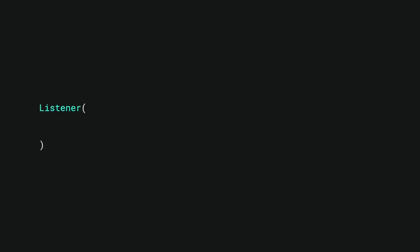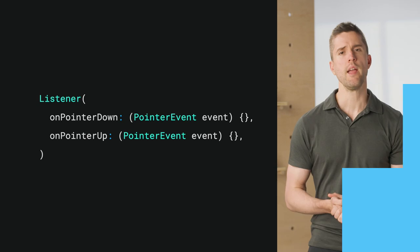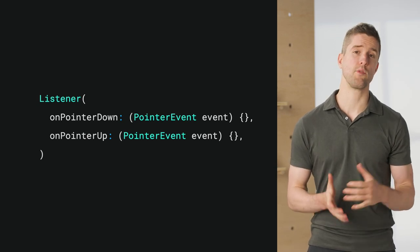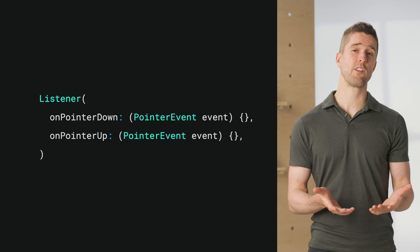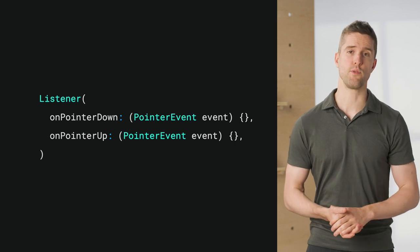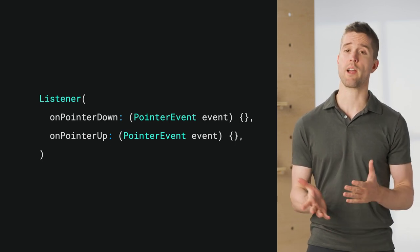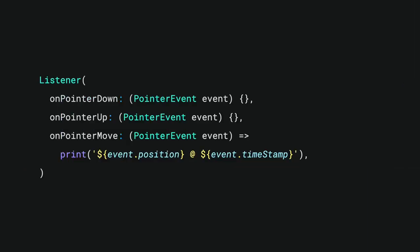Add some callbacks. To follow click events, subscribe to OnPointerDown and OnPointerUp. That pointer event class contains everything you could care about, including the location, time, device, type of interaction, and even how hard the user is pressing, if applicable. To track things like swipes, pans, and zooms, provide an OnPointerMove callback.